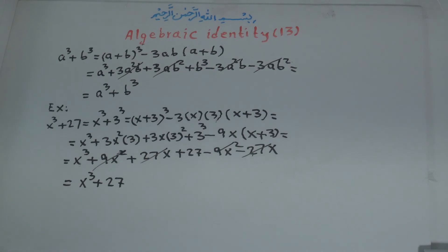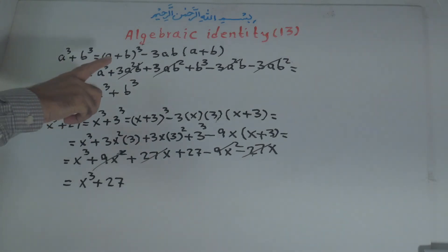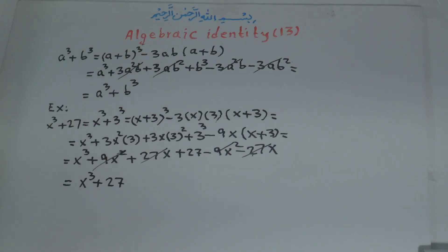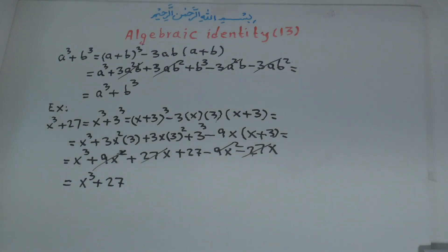In this example we proved that x to the power of 3 plus b to the power of 3 is equal to a plus b, all to the power of 3, minus 3ab times a plus b. This was information about Identity number 13. Thank you for watching. Please don't forget to like, subscribe, and share the video with your family and friends, and press the notification bell to get notified for more videos. Have a wonderful day — bye-bye!